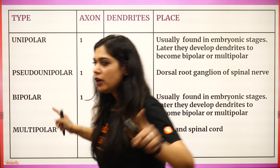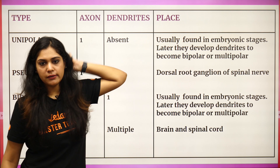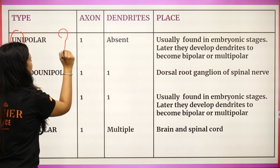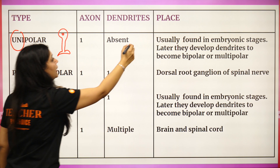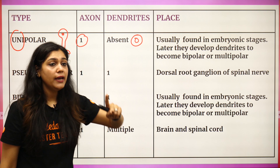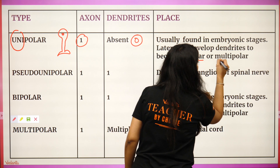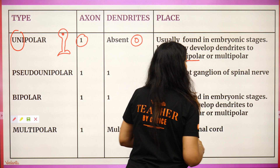Full attention in the class — 100% attention — because you have to make this table yourself at home. The columns are: type, axon, dendrite, and place — where do we find each type? First is unipolar. Uni means single pole, only one pole. It doesn't have a dendrite — no dendrite — it only has an axon. And where do we get it? In embryonic stages. After that we don't get it, because it becomes bipolar or multipolar.